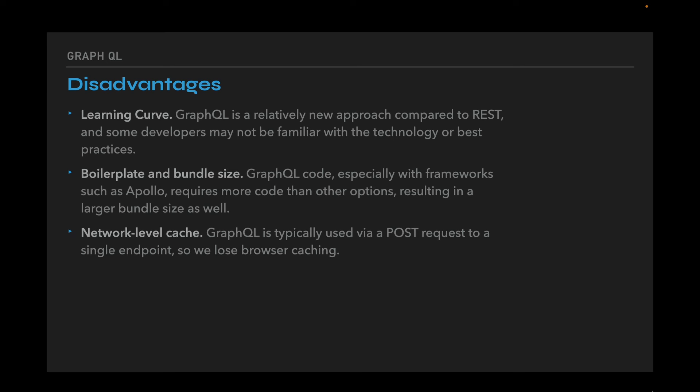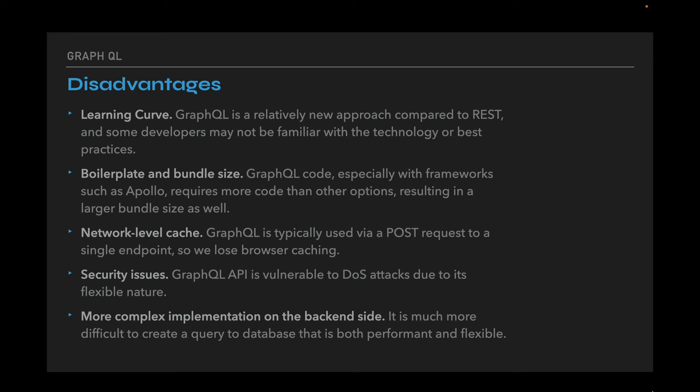Network level cache: GraphQL is typically used via a POST request to a single endpoint, so we lose browser caching. Security issues: GraphQL API is vulnerable to denial of service attacks due to its flexible nature. And it has more complex implementation on the backend side — it is much more difficult to create a query to the database that is both performant and flexible.